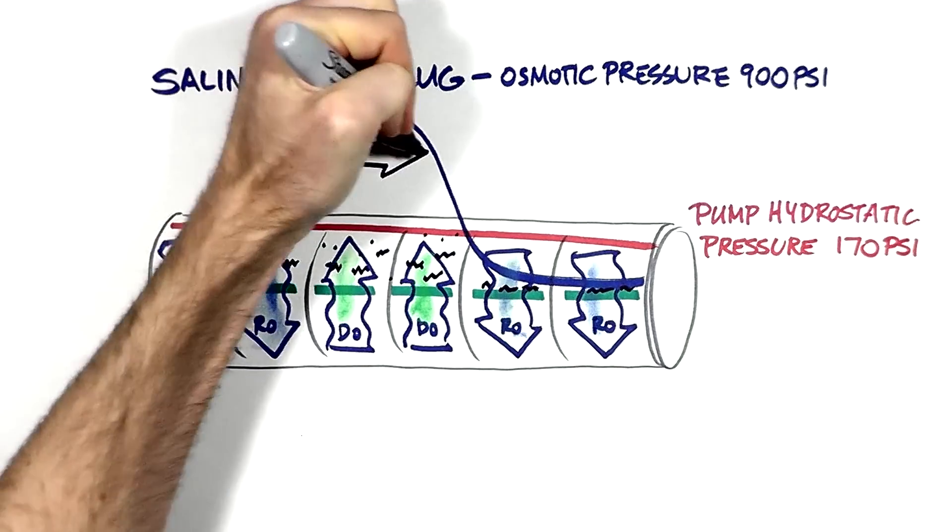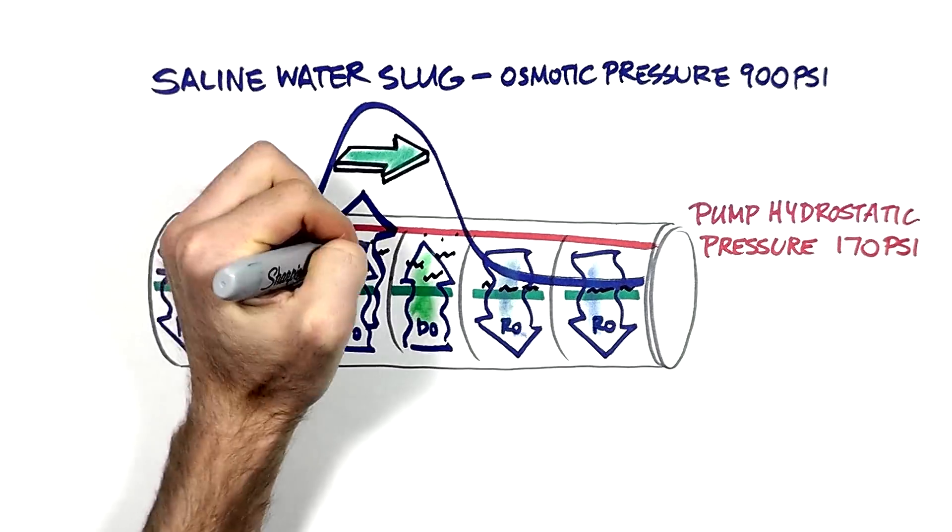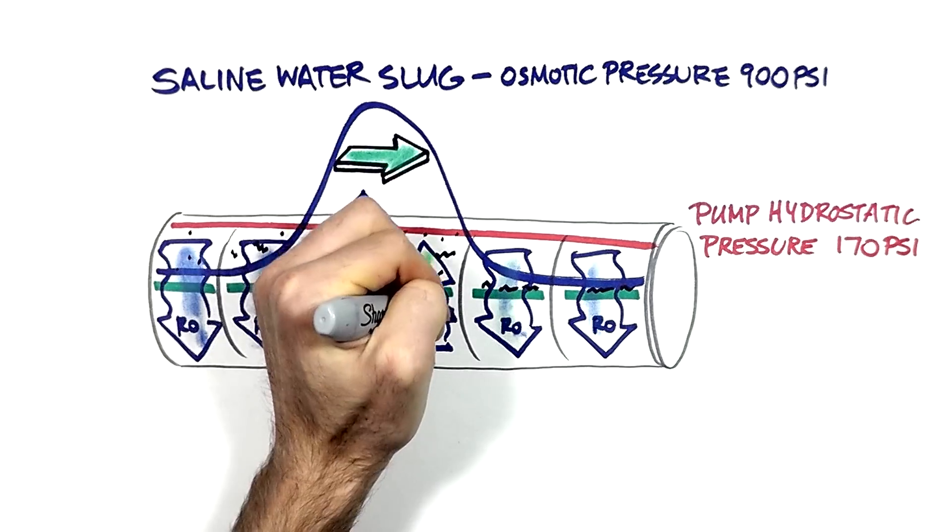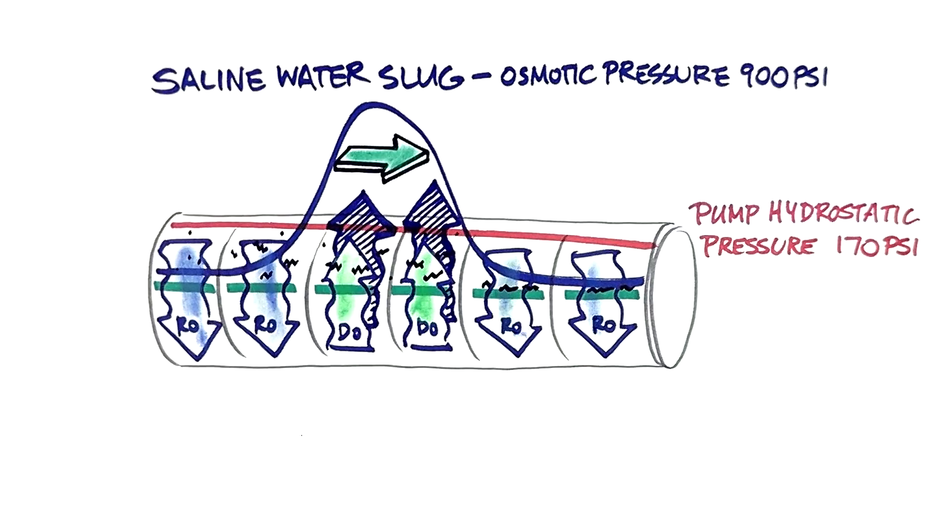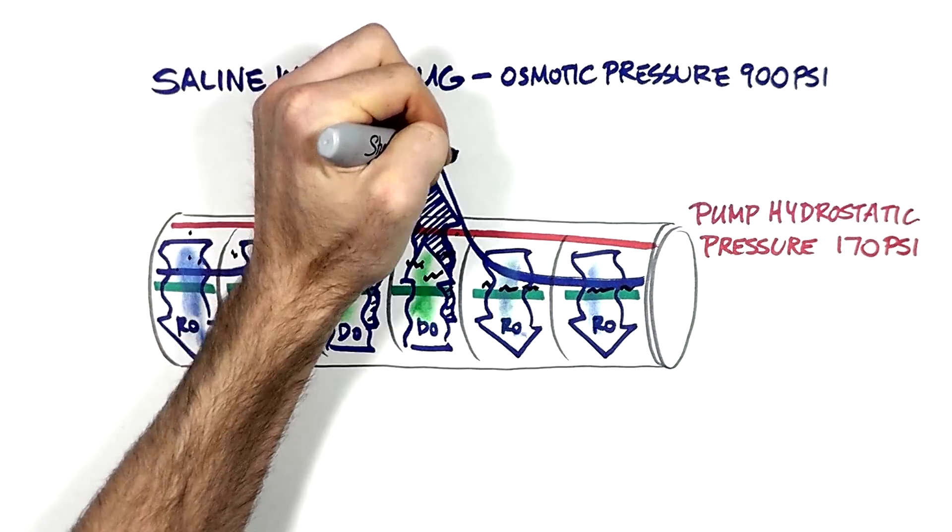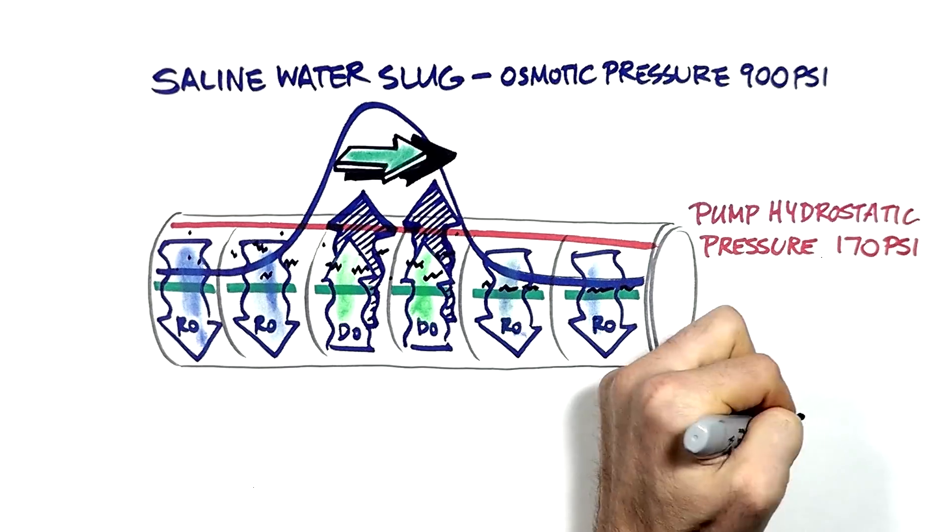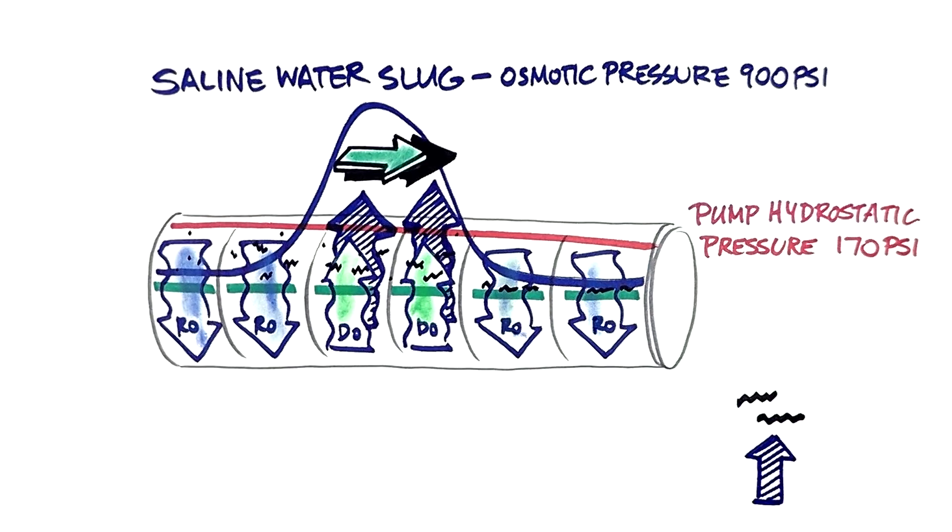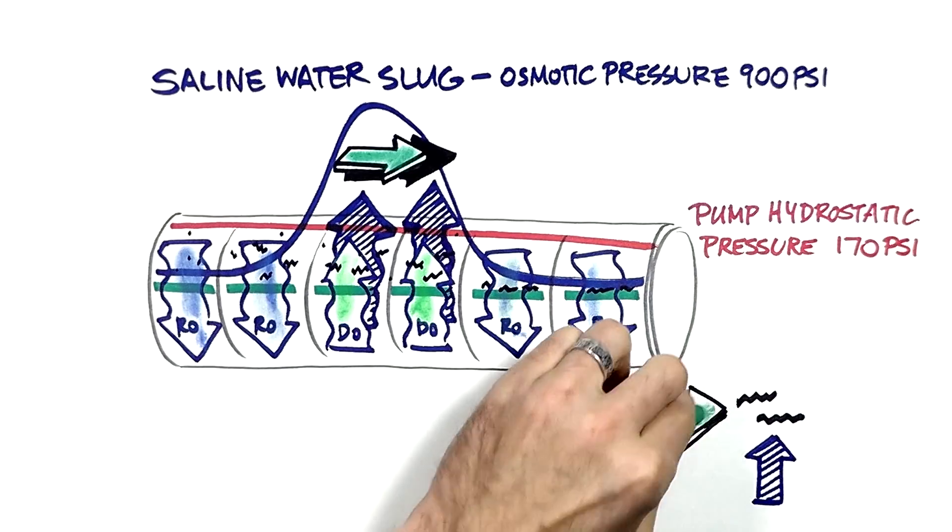The fouling is lifted from the membrane surface and is swiped out to the drain with reject water. Feed water cross-flow velocity increases several times in the area where the slug is moving. Because the permeate flows into the saline water slug and increases the water volume several times, there's an increase in the feed flow velocity. The fouling layer is affected by two cleaning forces simultaneously, upflow from direct osmosis and cross-flow shearing velocity.